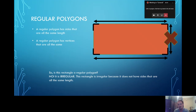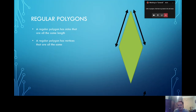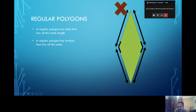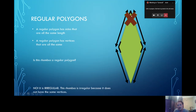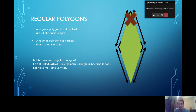Everybody say 'irregular polygon.' When we put 'ir' at the beginning of regular, it means 'not.' Now let's look at this shape and see if it is a regular polygon. It has to have sides that are all the same length and vertices that are all the same. Does it have sides that are all the same length? Yes, it does. But look at the vertices — these two vertices are actually smaller than the other two. The ones on the sides look really wide, but the ones at the top and bottom are really small. So that's how we know it is an irregular polygon.